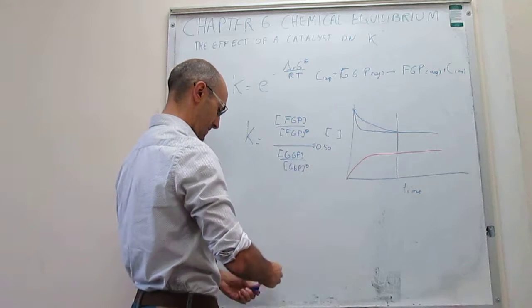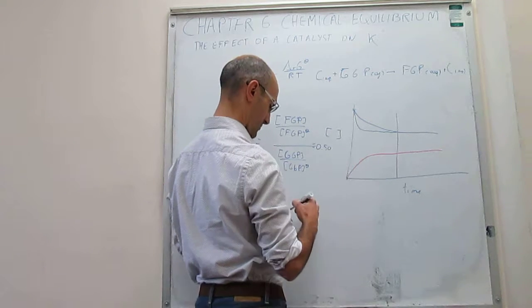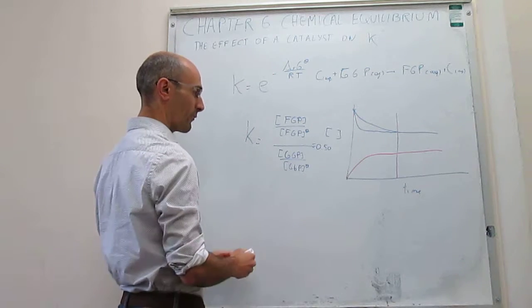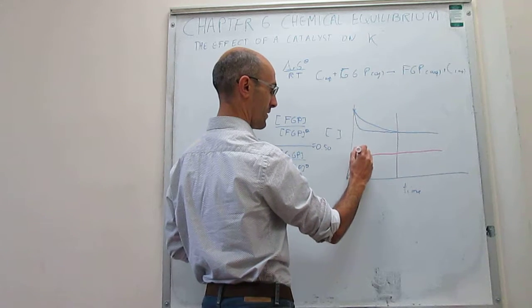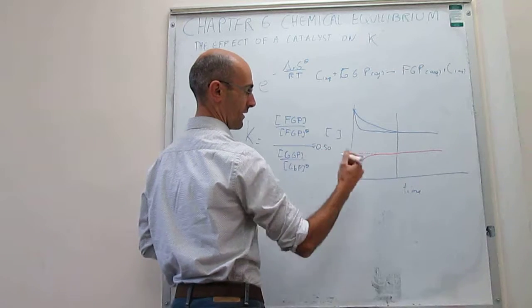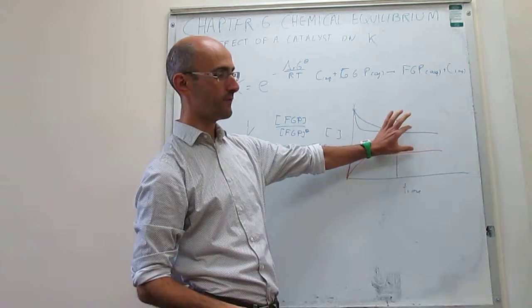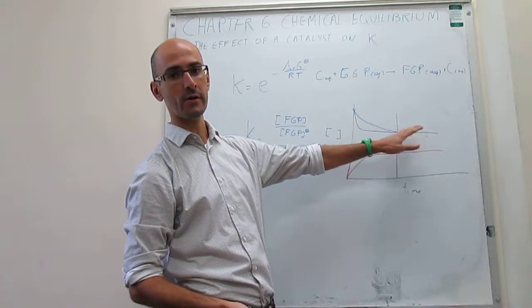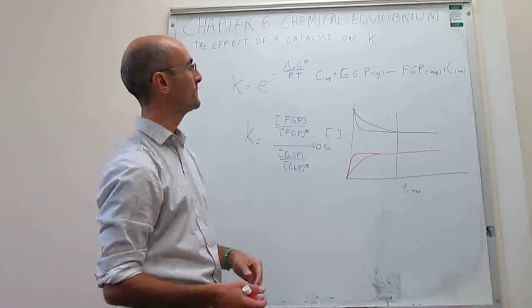And then in the presence of that catalyst for products, again you will reach your products equilibrium much faster. So you will start like this and reach products really fast, and then it doesn't change. So again we can say that's what happens when you have a catalyst. Notice that the point of equilibrium, the ratio of the concentration of products to the reagents doesn't change. You just reach that point of equilibrium sooner.